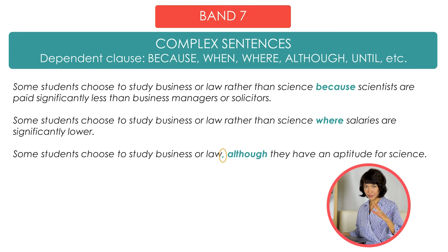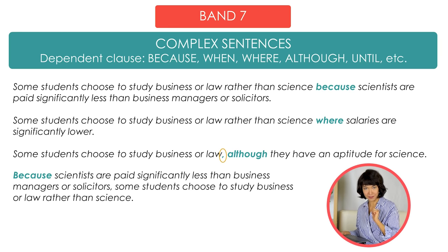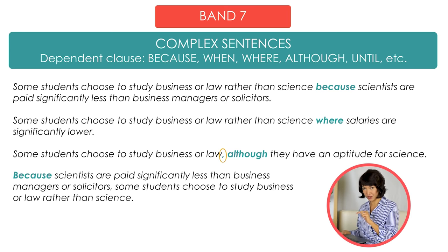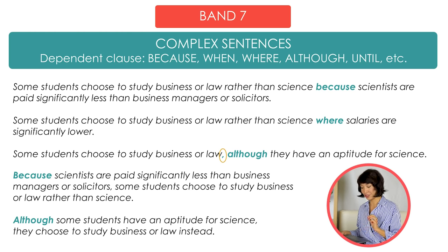So let's transform the first sentence — we move 'because' to the beginning: 'Because scientists are paid significantly less than business managers or solicitors, [comma] some students choose to study business or law rather than science.' We can't really transform the second sentence in this way because it will make no sense. But we can do it with the third example: 'Although some students have an aptitude for science, [comma] they choose to study business or law instead.' To get a high score for your grammar, it's really important to use commas correctly.